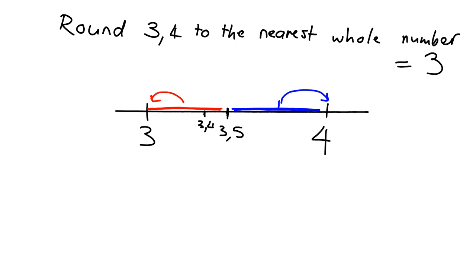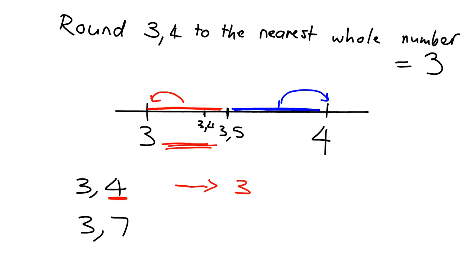So what we need to do is look at the number just immediately to the right of the whole number. If it is smaller than 5, it'll be in this area and so it will round down to 3. If, on the other hand, we had something like 3.7, it's sitting over here, and the 7 is above 5, so it will round up to 4.